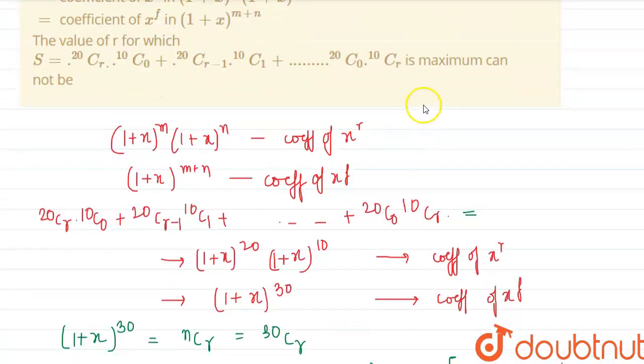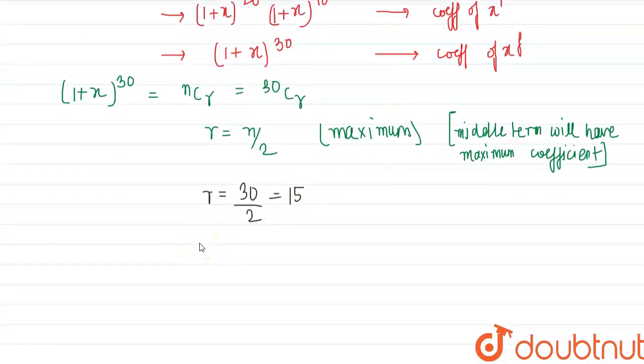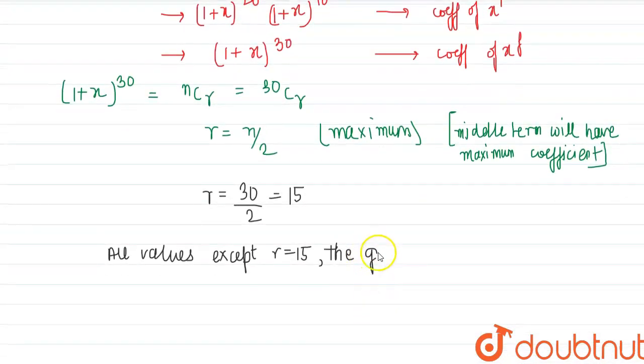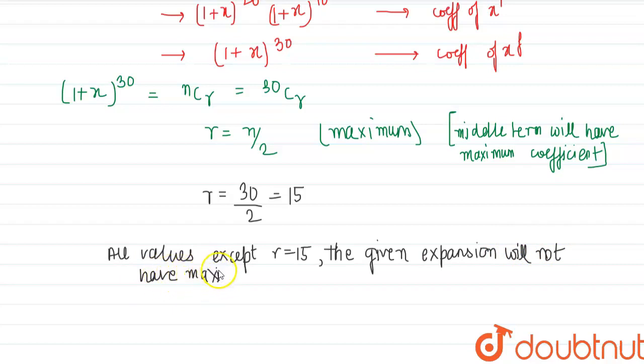So, the value of r for which S is maximum is 15. Therefore, all values except r equal to 15 will not give the maximum value for the given expansion, which is the required answer.